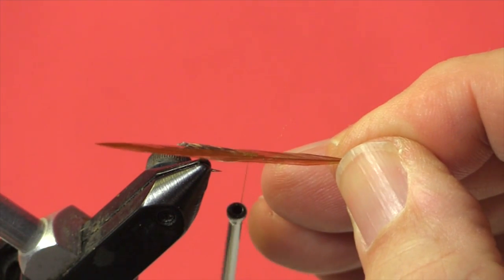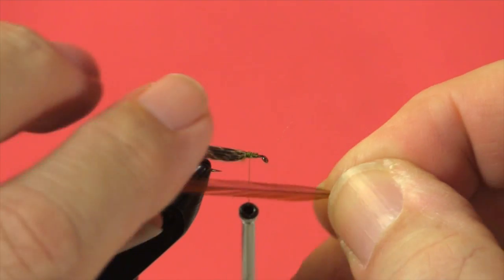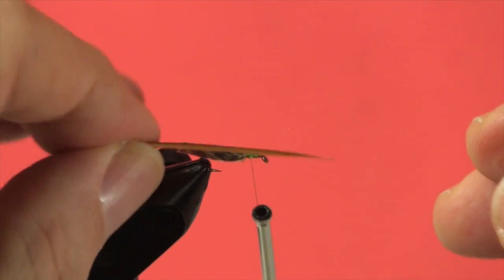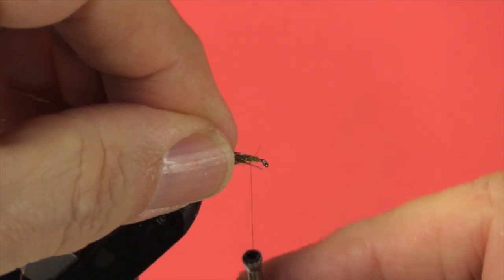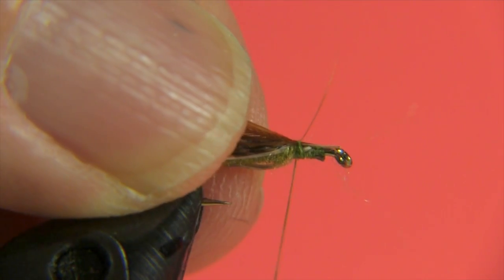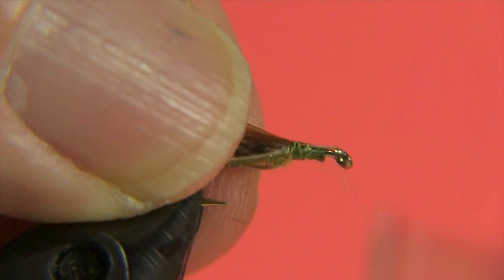Now dry fly hackle comes in with a shiny side and a dull side. We tie it in with the shiny side facing us so that when we begin to wrap it, it puts that shiny side forward.